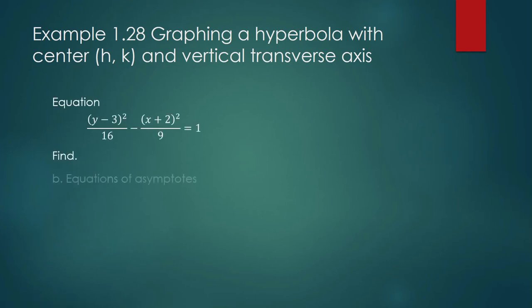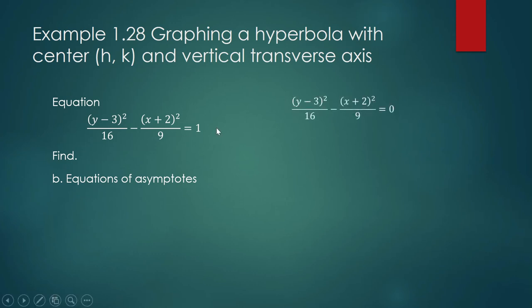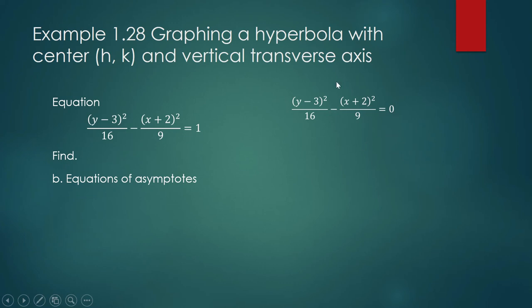Now find the equations of the asymptotes. These are two intersecting lines, and our hyperbola follows the direction of these asymptotes. Rather than memorizing the formulas — which can be confusing since you have two sets of equations depending on whether the principal axis is vertical or horizontal — my advice is to equate the expression to zero and solve for y, or solve for y minus 3. It's easier to derive the asymptotes this way.